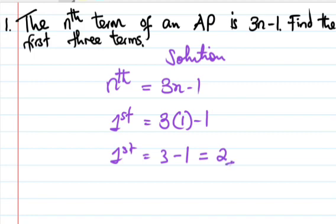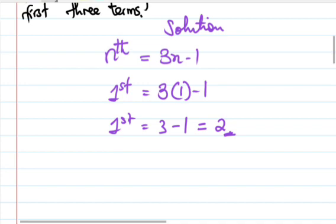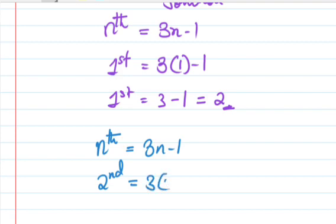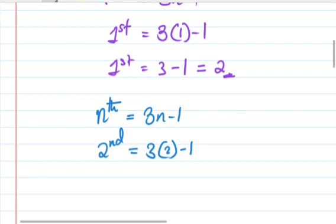For the second term, the nth term is 3n minus 1. So the second term, we put n equals 2. It's 3 times 2 minus 1, which is 6 minus 1. Our second term is 5.